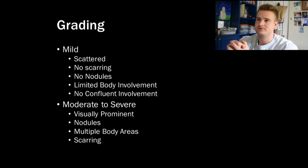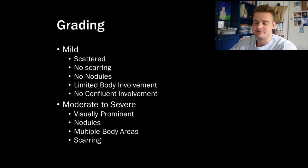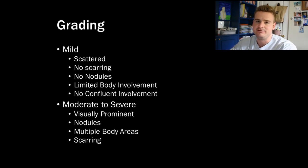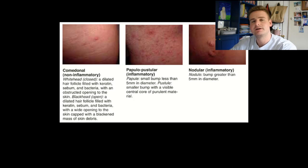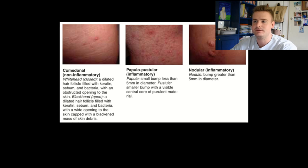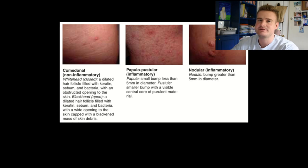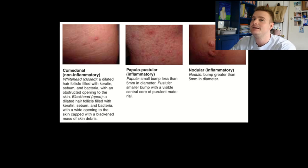Nodules are essentially large what people refer to as cystic acne — more than five millimeters in diameter. In moderate to severe acne you have scarring, multiple areas affected, nodules, and it is visually very prominent. Comedones are just blackheads or whiteheads; papules are larger than that but still less than five millimeters in diameter. If they reach above five millimeters it's a nodule, and if you have nodules you'd be graded as severe acne.